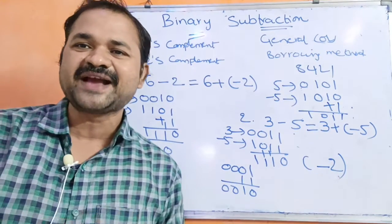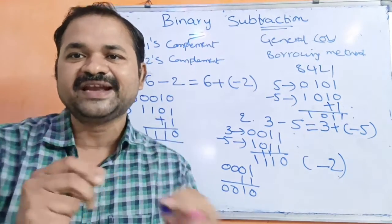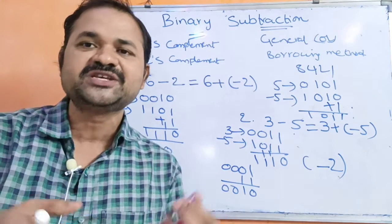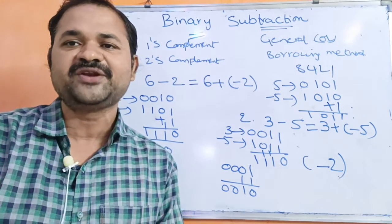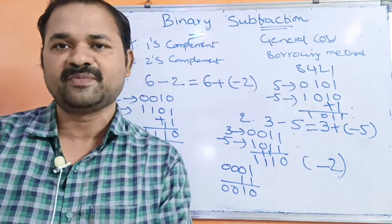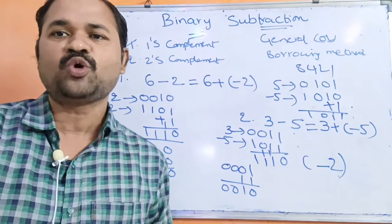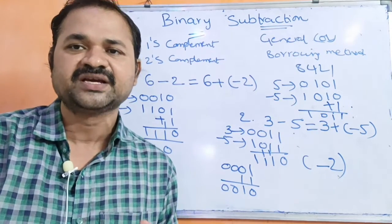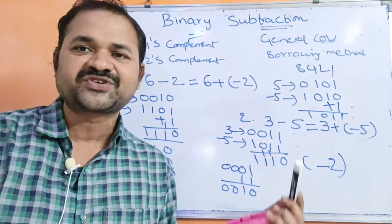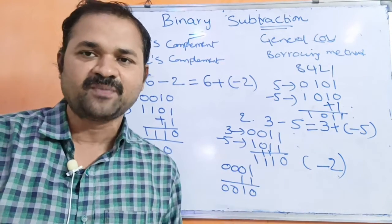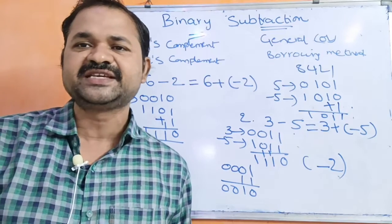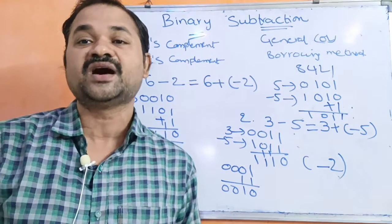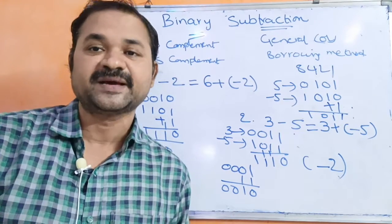So here, subtraction means we are performing addition only, but using one's complement notation and two's complement notation. This is how we do binary subtraction using one's complement and two's complement. In the next video, we will see the second approach using the borrowing method.